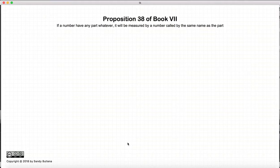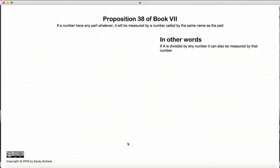This video presentation is going to be on Proposition 38 of Book 7. Now this proposition states that if A is divisible by any number, it can also be measured by that number.